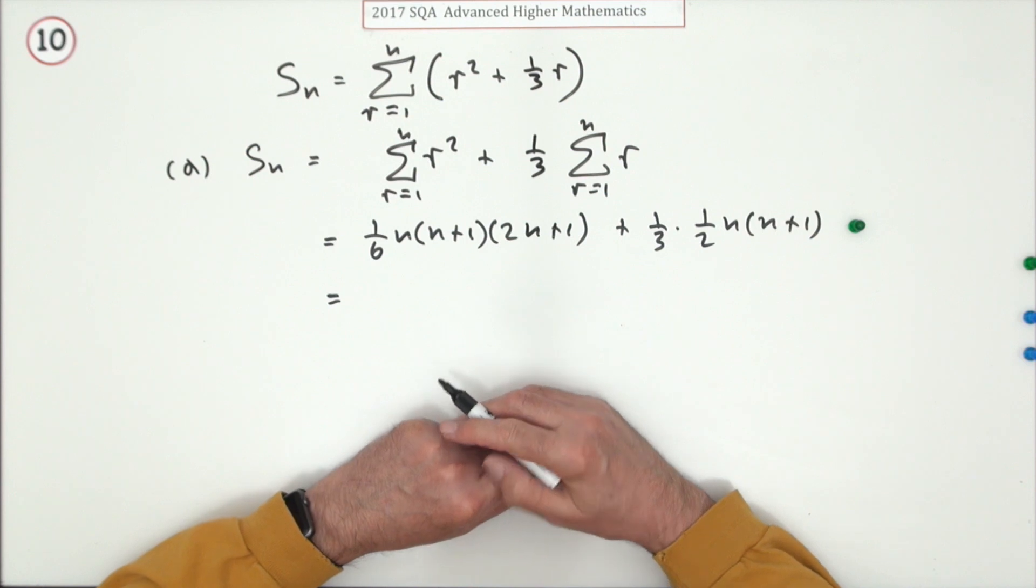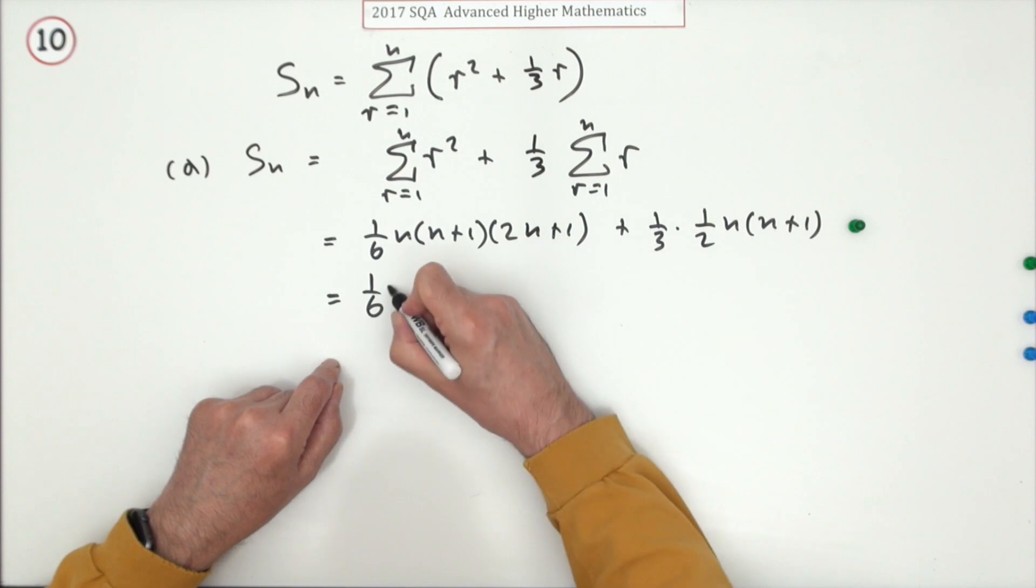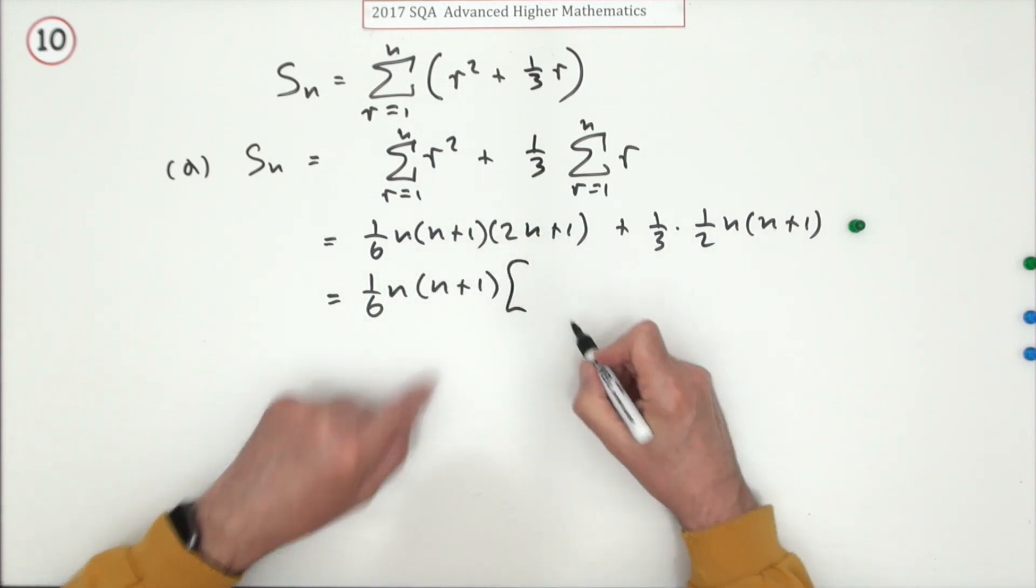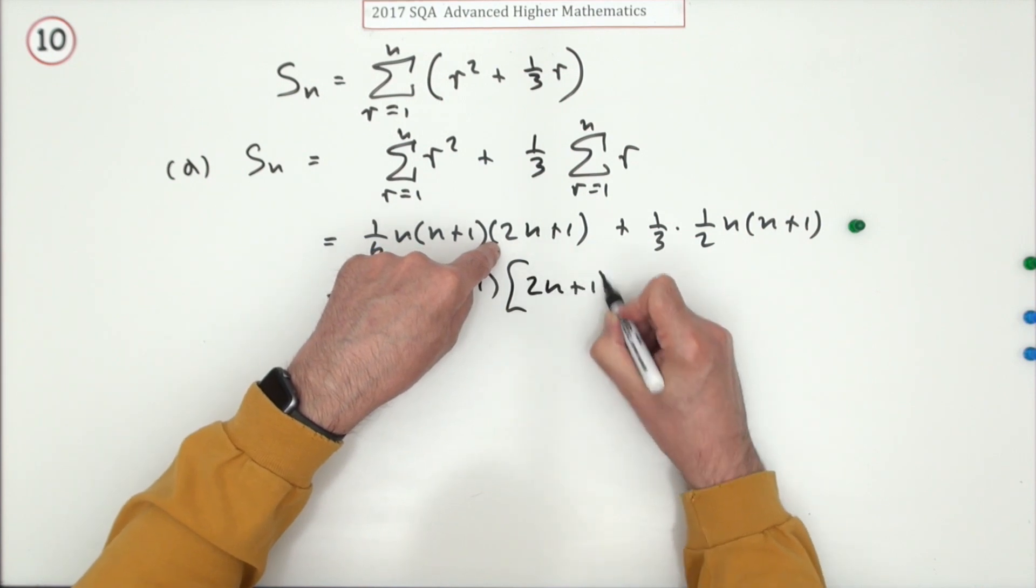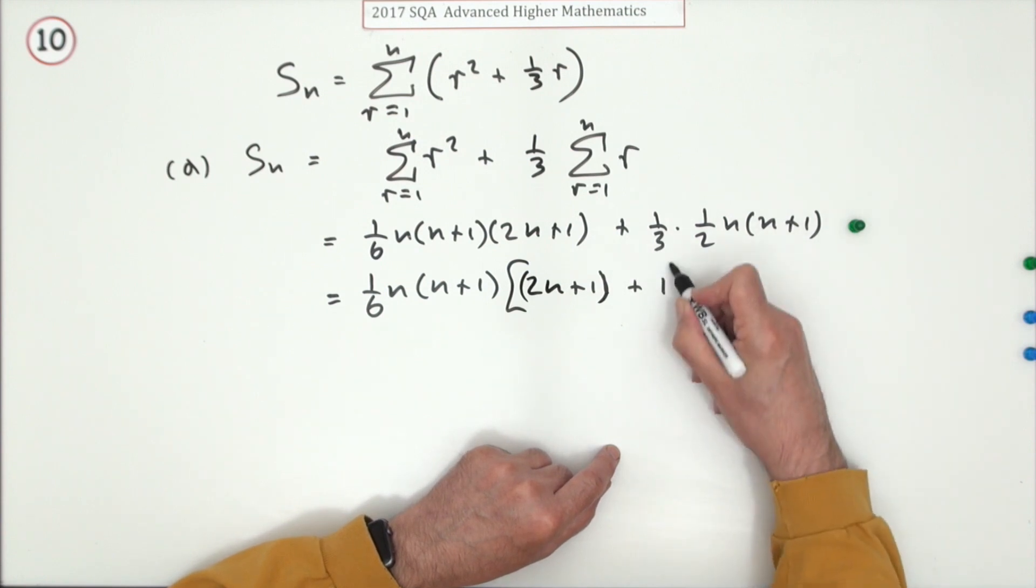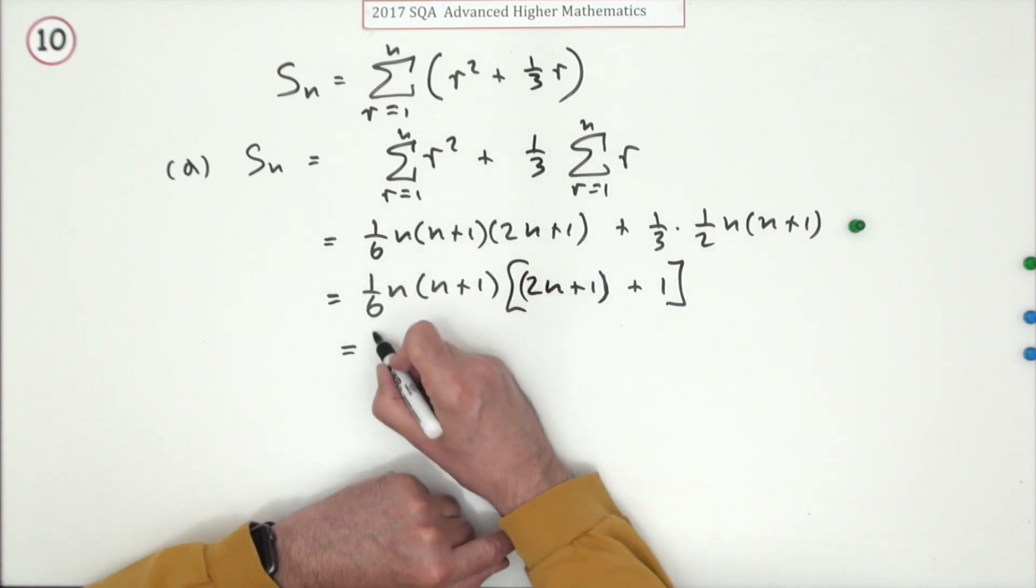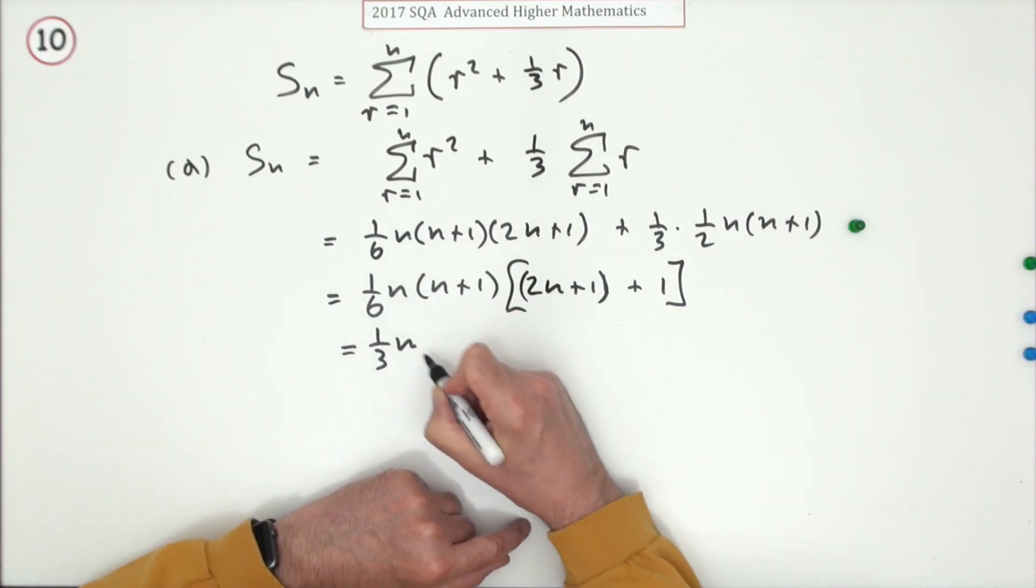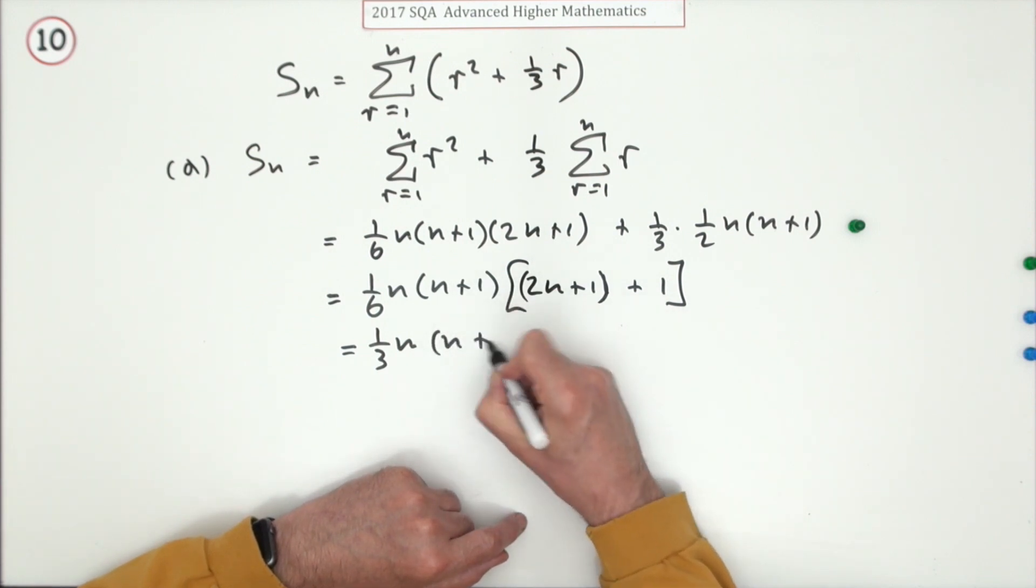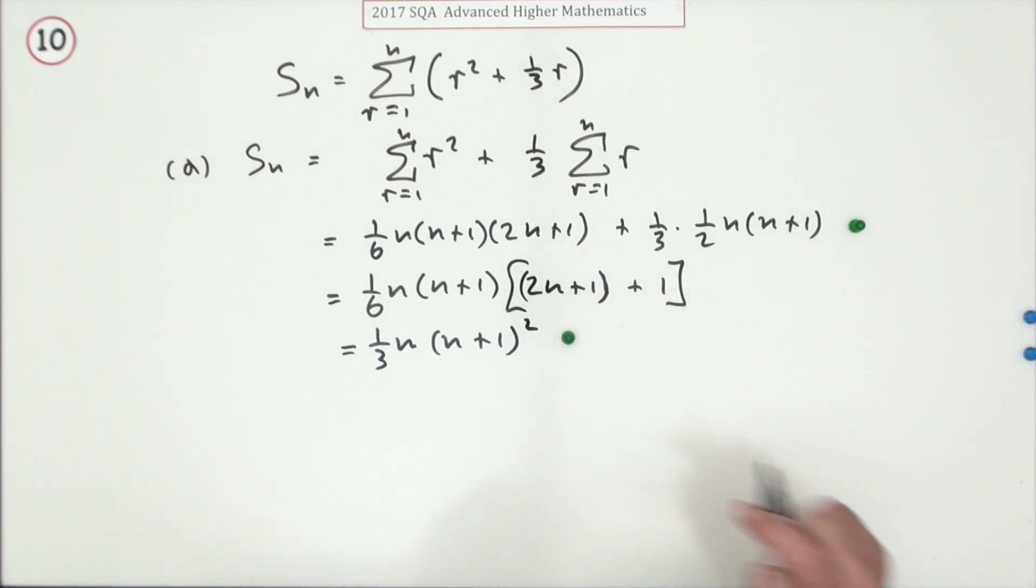So the next mark's just for tidying up. Well, it's full of factors - that's a sixth, that's a sixth, they've both got an n, they've both got an n plus one, so that just leaves this factor here, two n plus one. And on this side I've got it all, so it's just plus a one. Well, that's two n plus two, so that two can come out to knock this to one-third, and that then makes that an n plus one, which will join that one as an n plus one squared. And that gets the second mark.